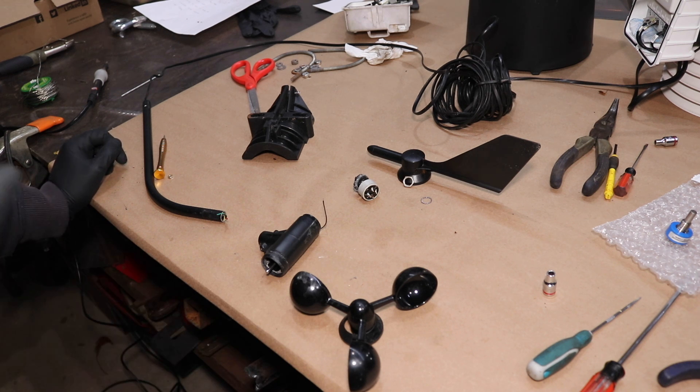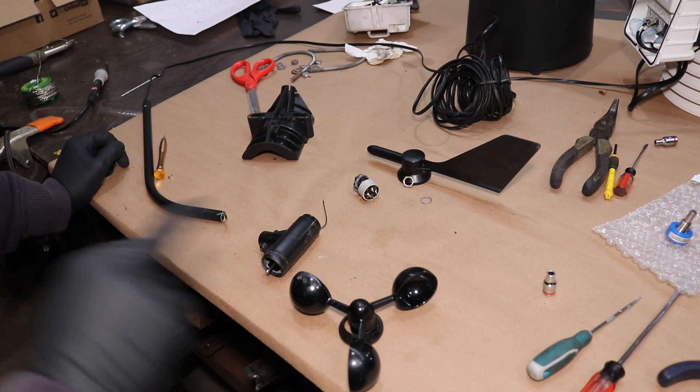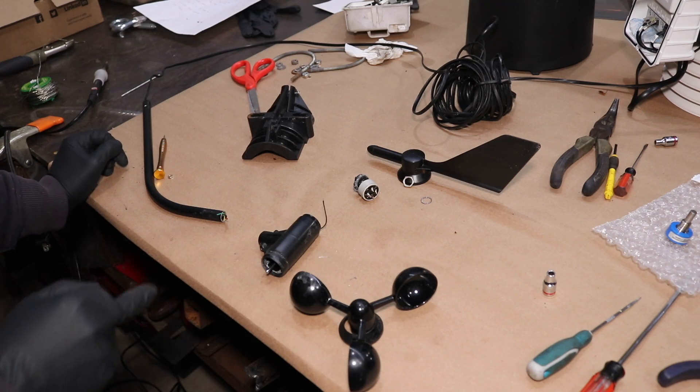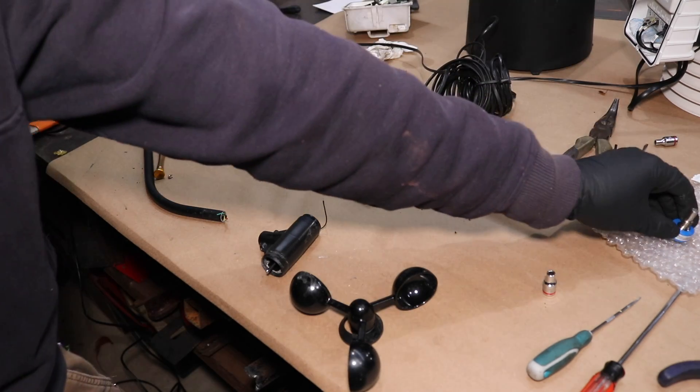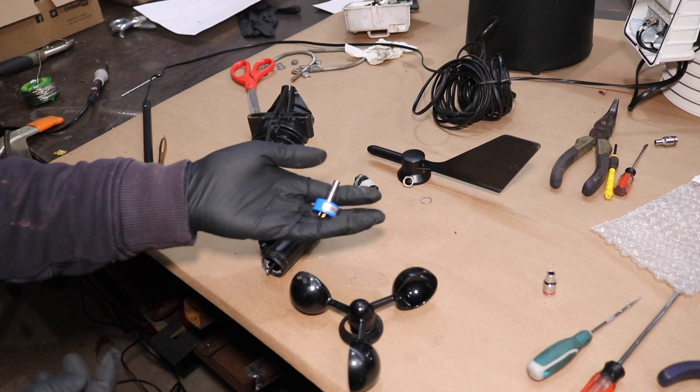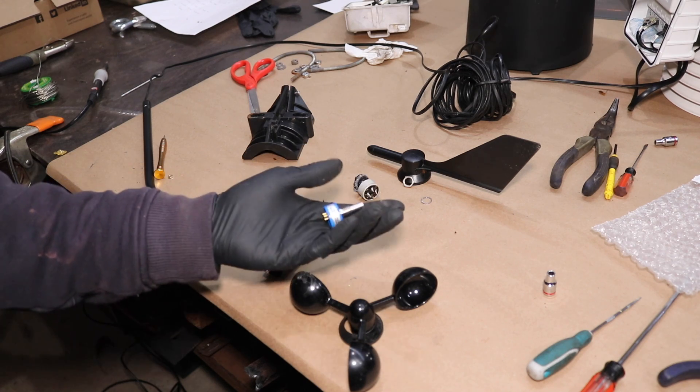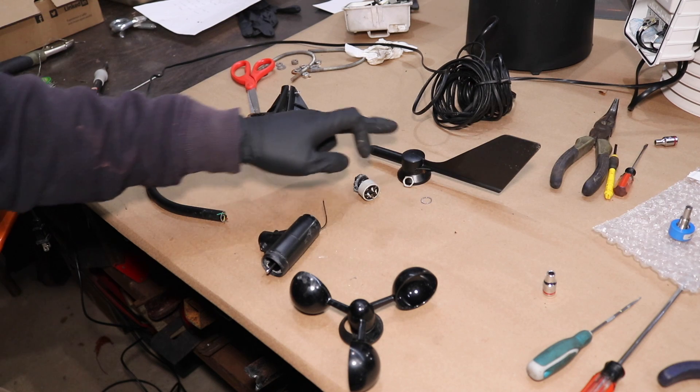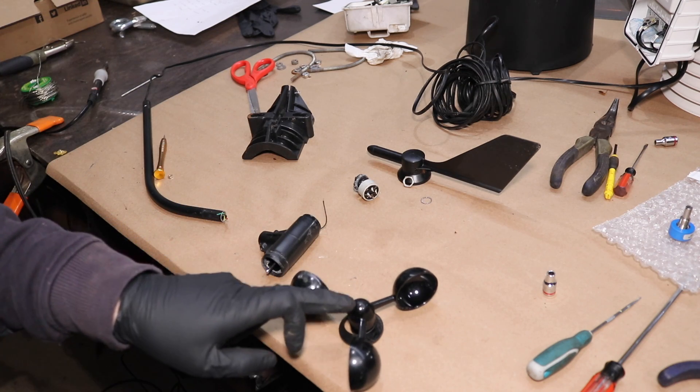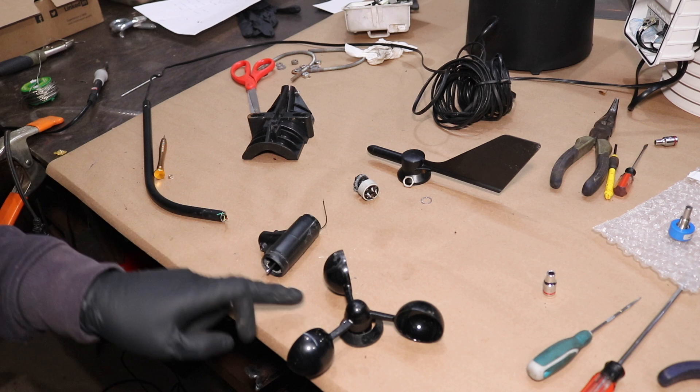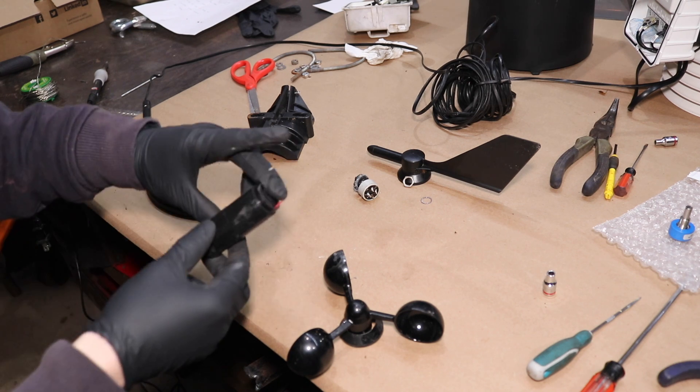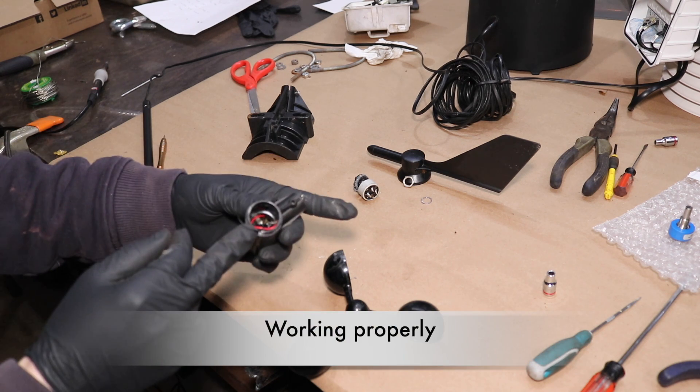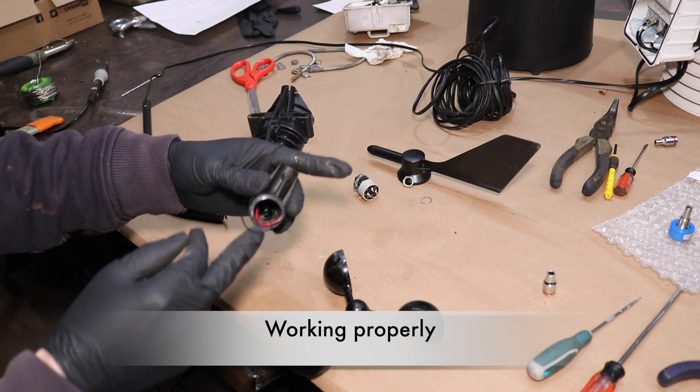However, after doing some extensive research and translating articles in German and Russian, I have found what I believe to be a readily available replacement potentiometer. And that should fix our wind direction issue. The wind cups have been working fine. There is actually a reed switch inside this housing and I have tested this out with my voltage tester.